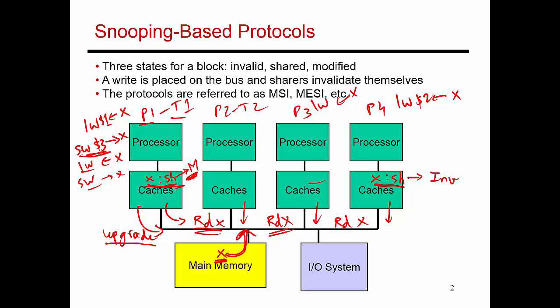So in this case, P1 has to provide the value of X that was requested by P3. It takes the value of X from cache and puts it on the bus. The value of X is picked up from the bus and placed in processor P3's cache. Since P3 is just trying to do a read, it gets placed in shared state. Similarly, the state of block X in P1 moves from modified to shared because you are now downgrading your permissions — there are going to be other cache copies of X, so you can't modify the block anymore.